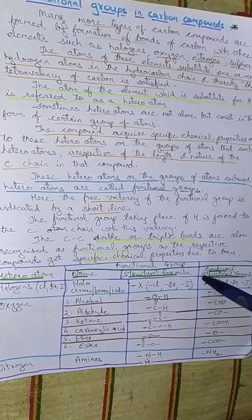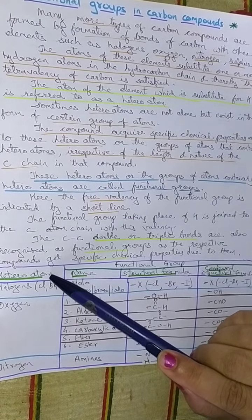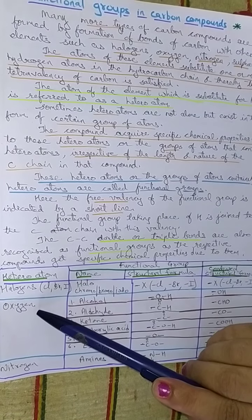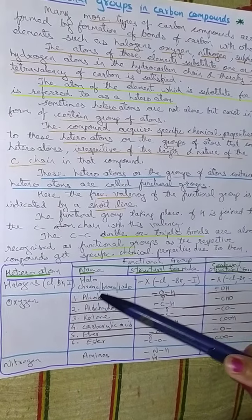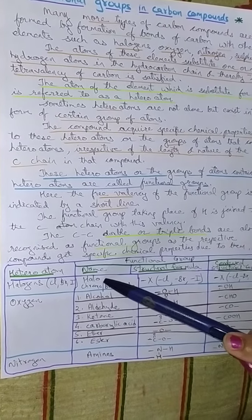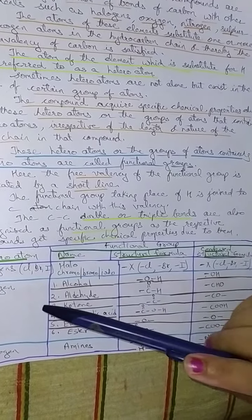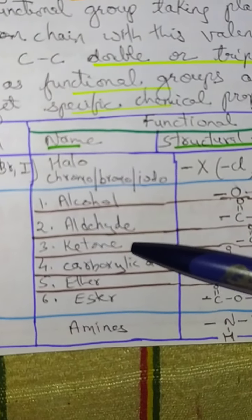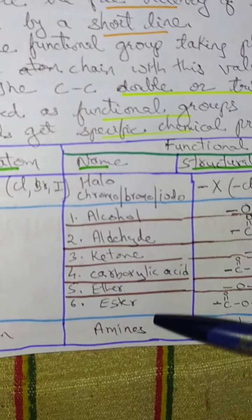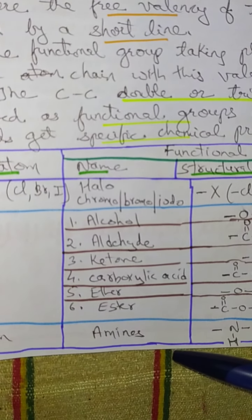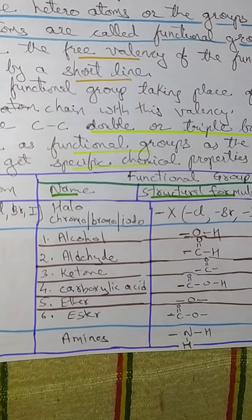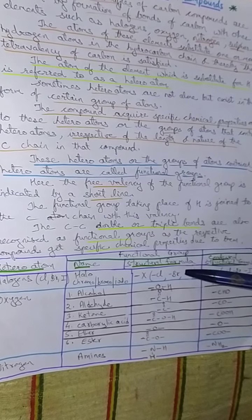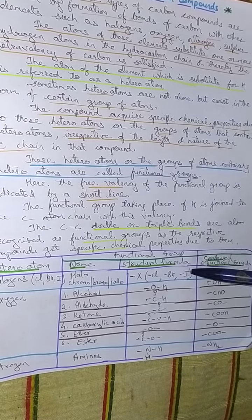Here the table shows some of the functional groups. The heteroatoms which can be joined may be halogens like chlorine, bromine, or iodine, or they may be oxygen or nitrogen. If a halogen is added, the name becomes halo — that is, chloro, bromo, or iodo. If oxygen is added, the compound may be called an alcohol, aldehyde, ketone, carboxylic acid, ether, or ester. If nitrogen is added, the compound is called an amine. For halogens, X stands for the halogen — chlorine, bromine, or iodine — which may be attached.